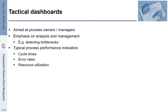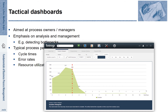Tactical dashboards are concerned with the overall process performance on an aggregated level. This means we do not look at singular cases, but at a whole batch of cases that have been running during a certain period of time. This is helpful for process owners and managers who are interested in averages and minimum and maximum values of performance. Tactical dashboards are meaningful for detecting bottlenecks; aggregated performance indicators may include cycle time, error rates, or resource utilization.